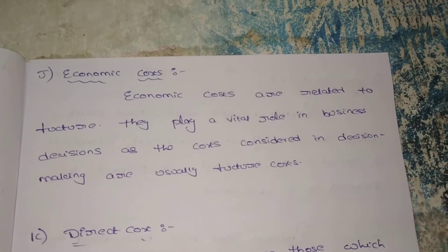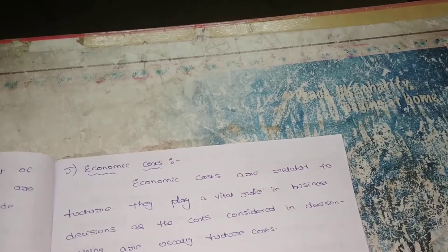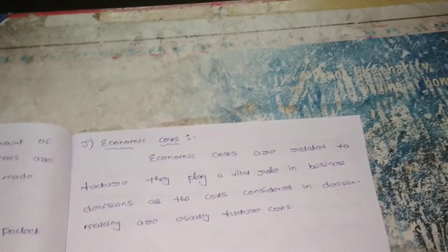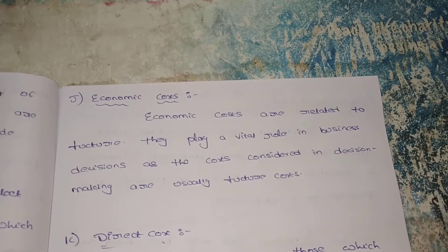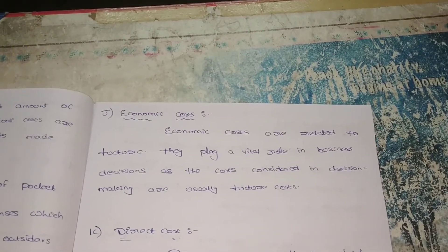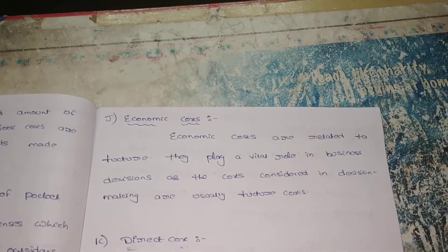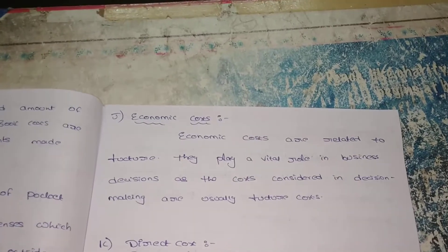Next, economic cost. Economic costs are related to the future — they play a vital role in business decisions. Economic cost means estimating, predicting, or anticipating the future. While we estimate the future, we incur some cost for that research, and that type of cost is called economic cost. For example, for a college wanting to enroll students, expenses on pamphlets and publicity about the college — those are economic costs.